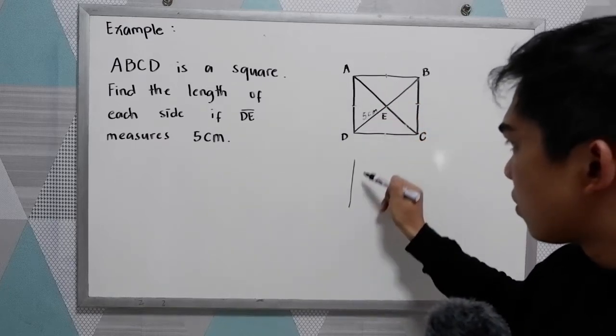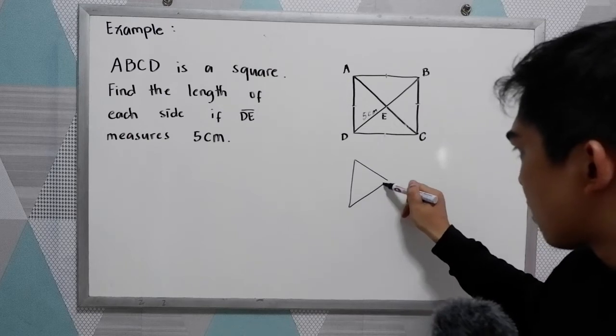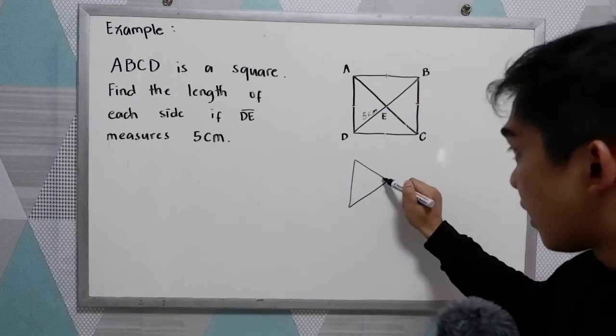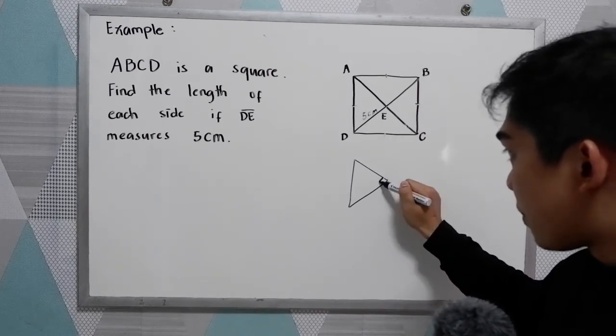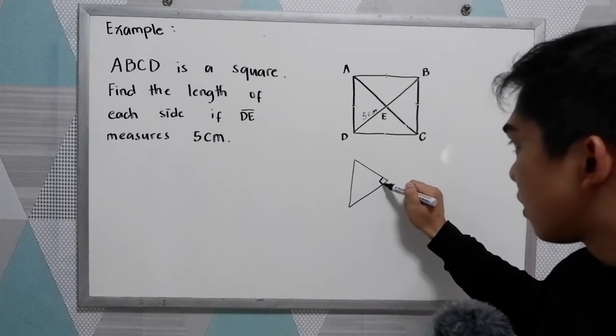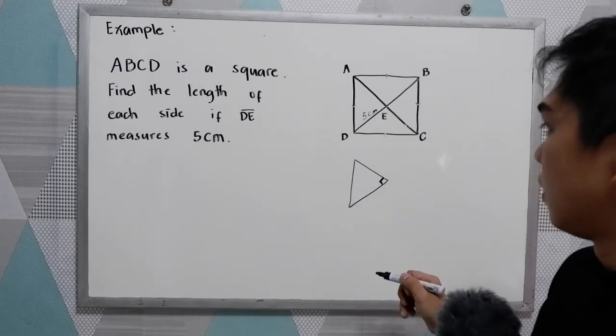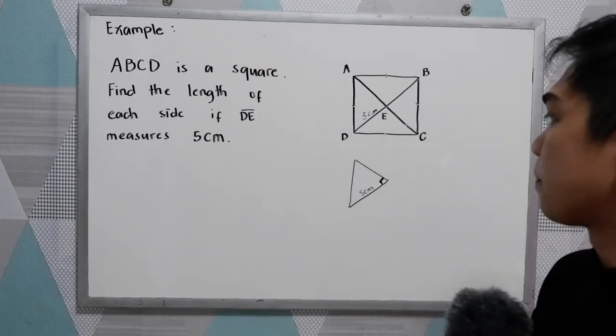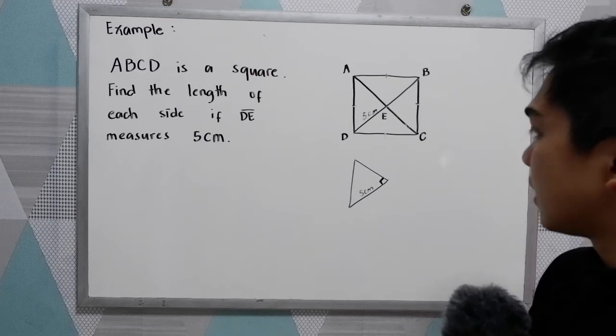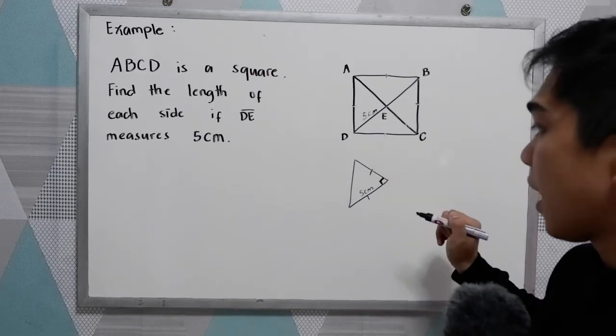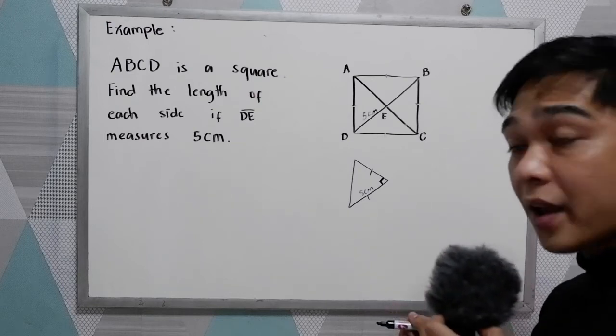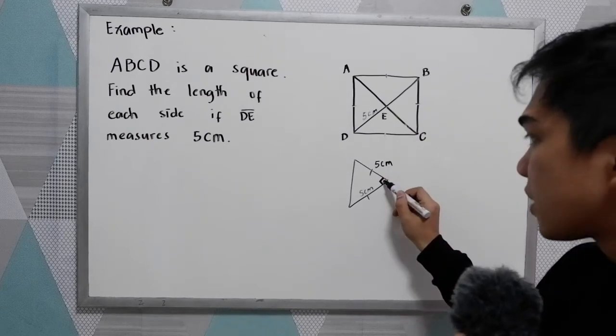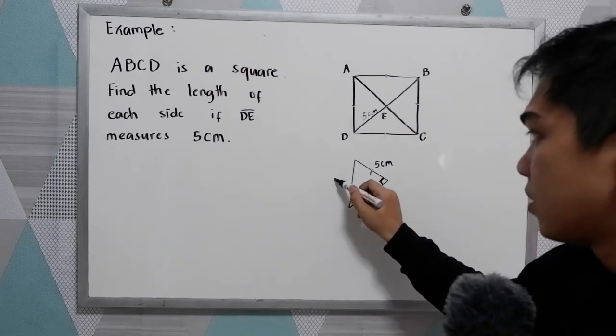So we bound the right, it will form a right triangle. Because in our property, diagonals will form a perpendicular. And this is 5 cm. In our property, it will form an isosceles triangle. So if this is 5, this is also 5 cm. So opposite our right angle is our hypotenuse.